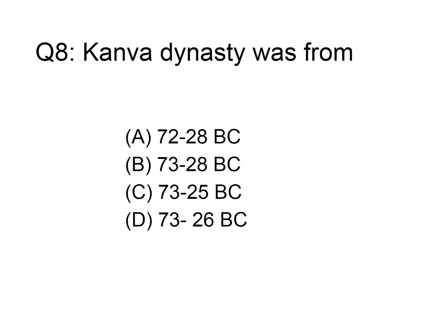The Kanva dynasty was from option A: 72 to 28 BC, B: 73 to 28 BC, C: 73 to 25 BC, D: 73 to 28 BC. The answer is option B, 73 to 28 BC. The Sunga dynasty was from 185 to 73 BC.